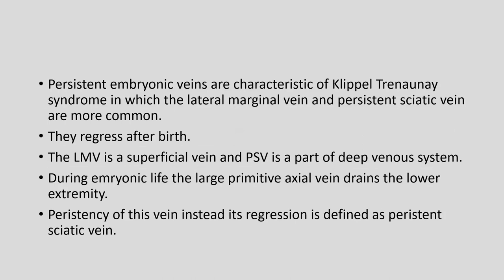Persistent embryonic veins are characteristic of Klippel-Trenaunay syndrome, in which the lateral marginal vein and persistent sciatic vein are more common. They normally regress after birth. The lateral marginal vein is a superficial vein and the persistent sciatic vein is part of the deep venous system. During embryonic life, the large primitive axial vein drains the lower extremity. Persistence of this vein instead of its regression is defined as a persistent sciatic vein.